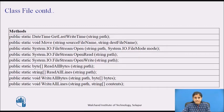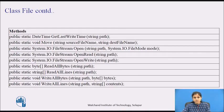The WriteAllBytes method creates a new file, writes the specified byte array to the file, and then closes the file. If the target file already exists, it is overwritten. The WriteAllLines method creates a new file, writes the specified string array to the file, and then closes the file.